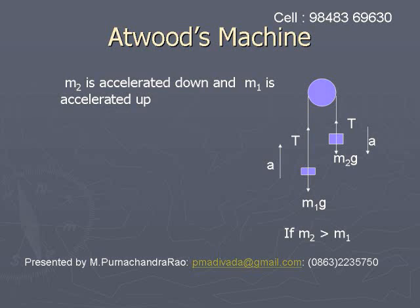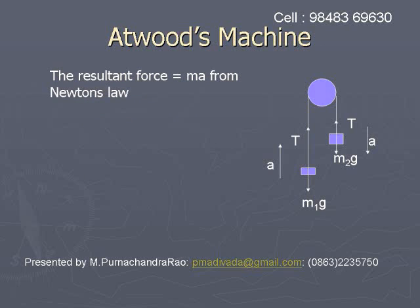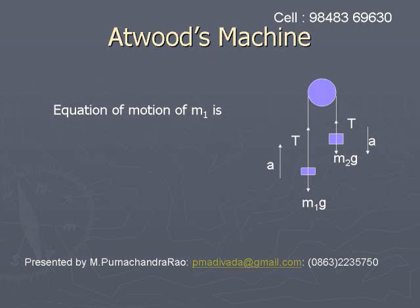We write the equations of motion by considering the tensions in the string. Over m2, the tension T acts upward, and since m2 moves down, T is less than m2g. For m1, tension T is greater than m1g since m1 moves upward. Applying Newton's second law, the resultant force on m2 is m2g minus T, giving: m2g − T = m2a. This is equation one. For m1, T minus m1g equals m1a. This is equation two.